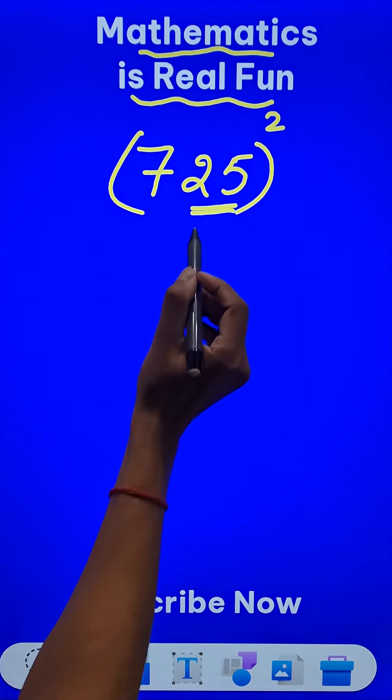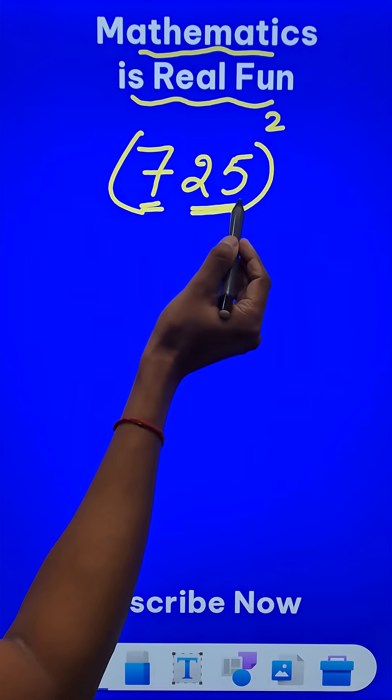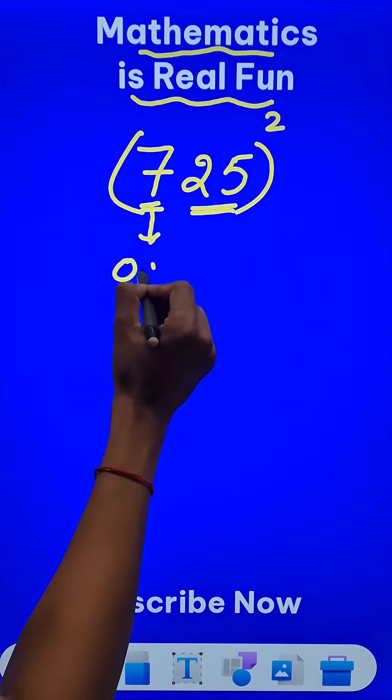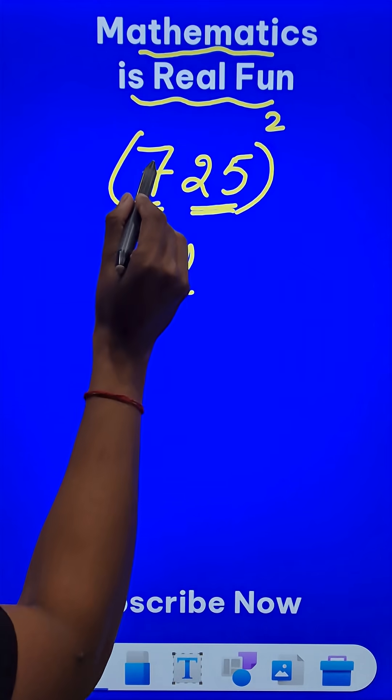You can see the number ends in 25 and the number apart from 25 is an odd number. What happens when this number is odd?